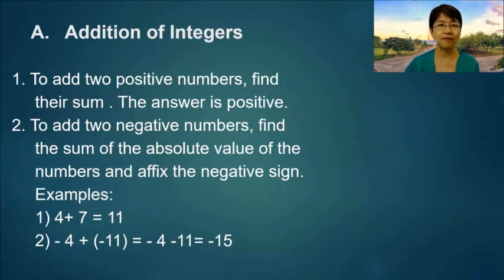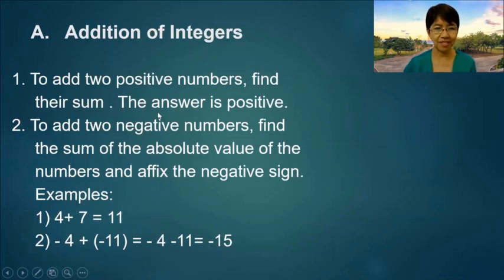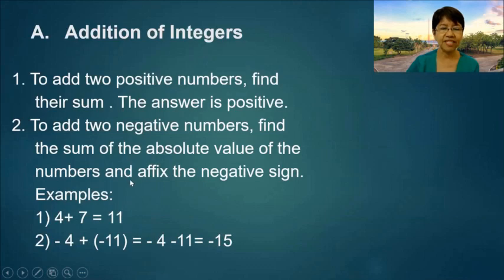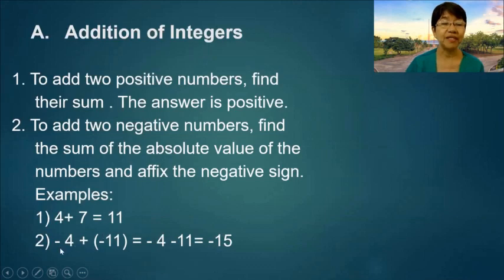Addition of integers. To add two positive numbers, find their sum and the answer is positive. To add two negative numbers, find the sum of the absolute values of the numbers and affix the negative sign. Examples: 4 plus 7 equals 11. Negative 4 plus negative 11 is equal to negative 15.